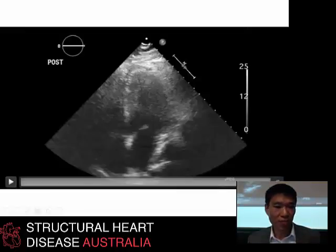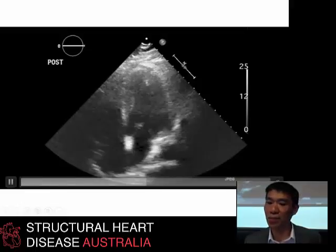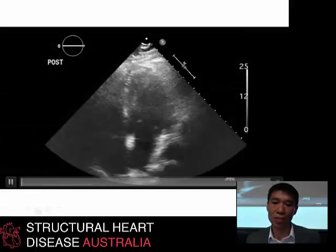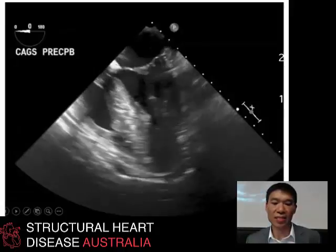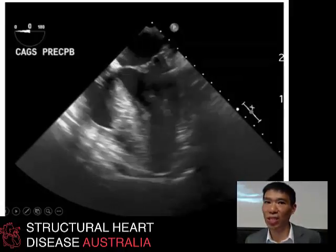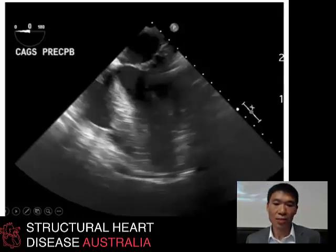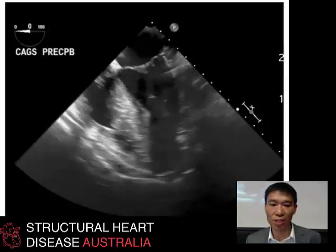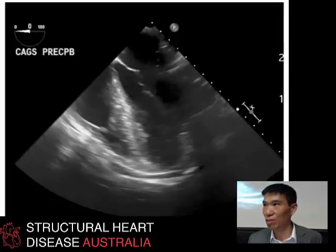This is a transthoracic four-chamber view in one patient, and in the same patient after being induced under general anaesthesia and having a transesophageal echo probe inserted, that's the same four-chamber view again. And it's obvious, looking at the same heart with the same loading conditions, that the right ventricle just doesn't look quite the same nor the motion quite the same. So there are going to be some confounders between using the same measures between transthoracic and TOE.